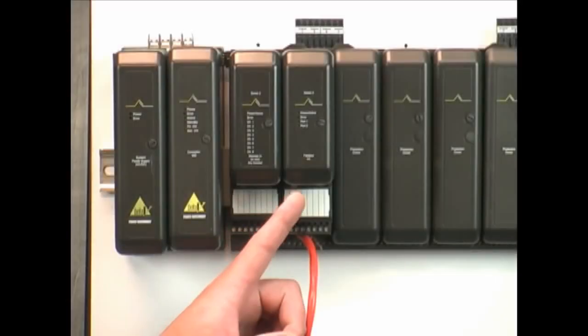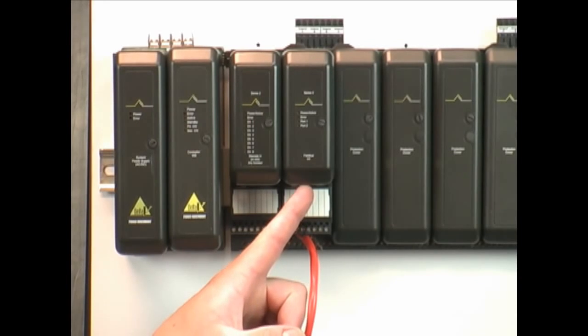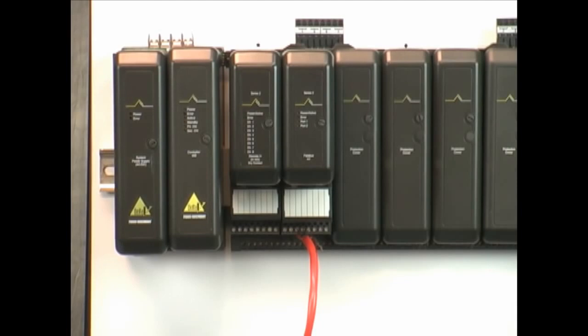So the first component in any Foundation Fieldbus segment is the H1 interface. Here you see a typical two port H1 interface connected into a Delta V controller. And this could be with any DCS system, Yokogawa, Honeywell.